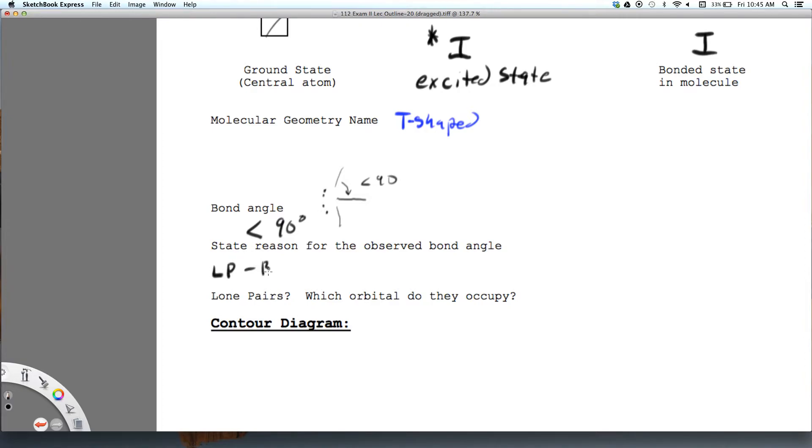So lone pair bonding pair repulsion is greater than the bonding pair bonding pair repulsion and that is why this angle is less than 90, or you could say this angle is greater than 180.